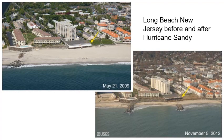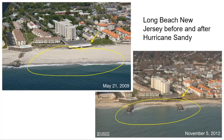This is Long Beach, New Jersey. You can see they had a nice wide sandy beach, and then the hurricane came along. Faster water and more water hitting the shore — all of their sand is gone. It got eroded.